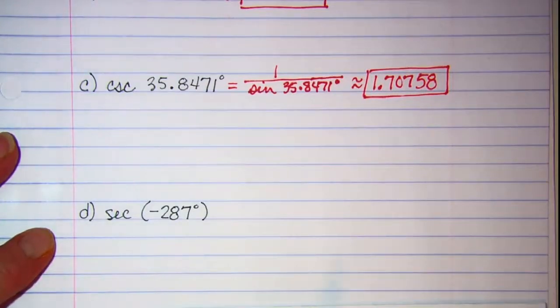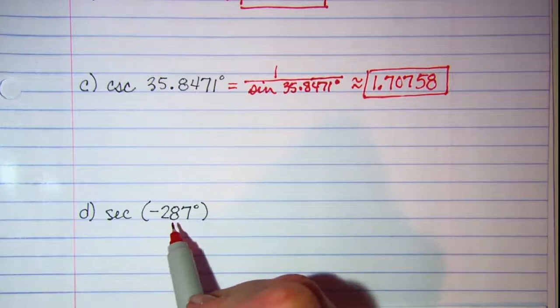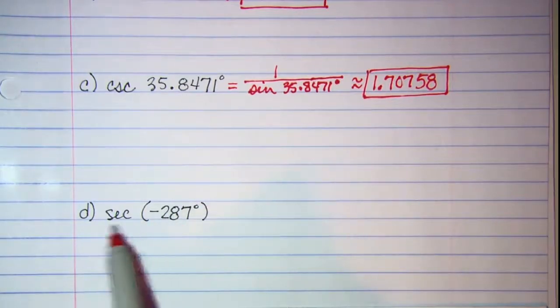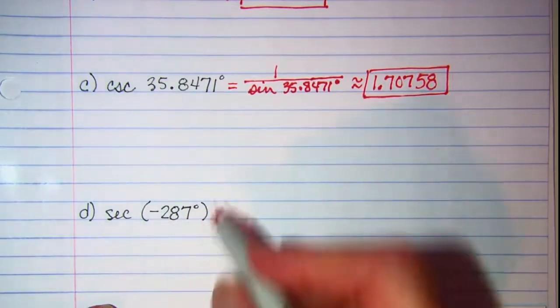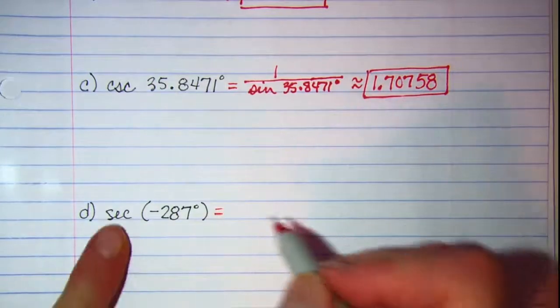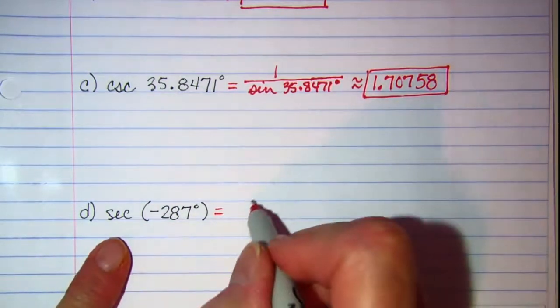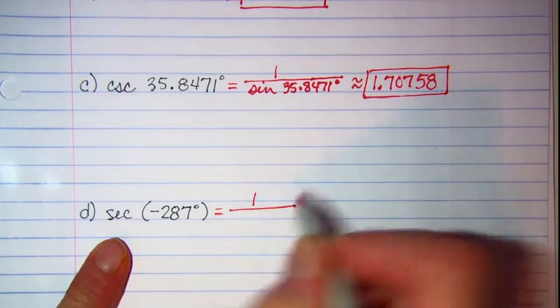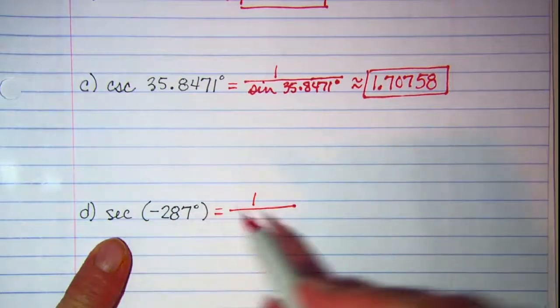Let's do one more. Now our calculators are okay with negative degrees, but again, this is a reciprocal function. So I need to write this as 1 divided by, and the reciprocal of secant is cosine,